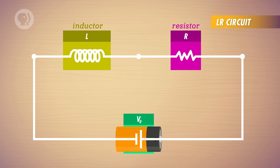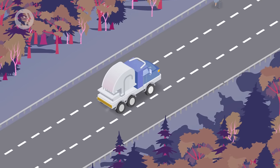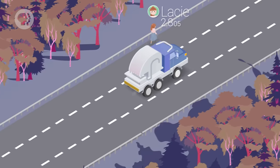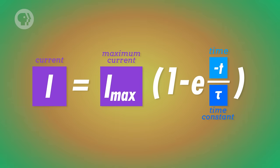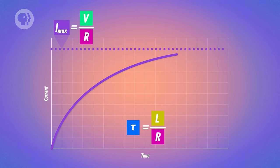If we set up this circuit and insert the battery, the voltage will immediately be V0, but the current won't reach its maximum value right away. That's because the inductor opposes the sudden change in current caused by the sudden voltage change. So the current will increase gradually until it eventually reaches maximum current, which is the battery's voltage divided by the resistance. Mathematically, the current in a circuit with an inductor is expressed as the maximum current times 1 minus e to the negative t over tau. The maximum current is the voltage divided by the resistance, and tau is the time constant, equal to the inductance divided by the resistance.